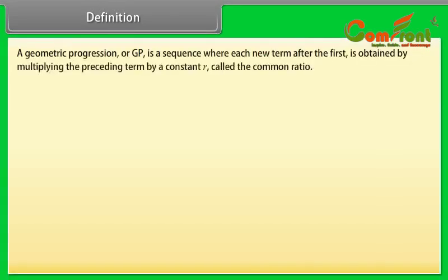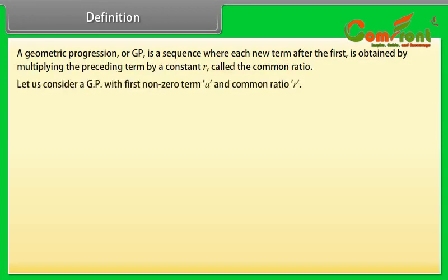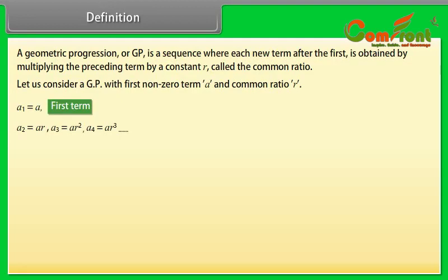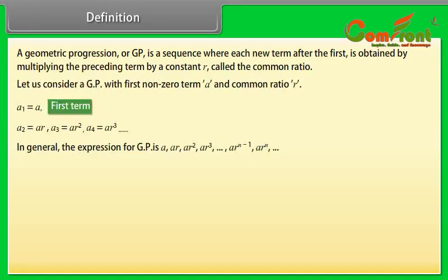Definition: A geometric progression or GP is a sequence where each new term after the first is obtained by multiplying the preceding term by a constant R, called the common ratio. Let us consider a GP with first non-zero term A and common ratio R. A1 = A, A2 = A×R, A3 = A×R², A4 = A×R³, and so on. In general, the expression for GP is: A, A×R, A×R², A×R³, up to A×R^(n−1), A×R^n, and so on.